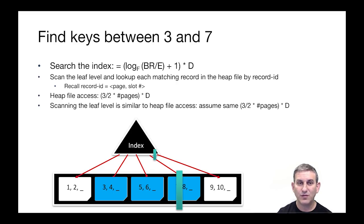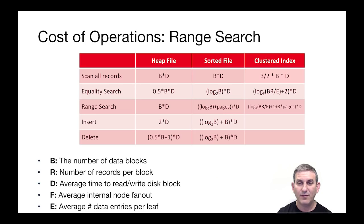Now the heap file was two thirds full. So the heap file access is going to be three halves times the number of pages for what we looked at in the sorted file. So that's three halves times the number of pages times D. And then scanning the leaf level of the index is the last thing to account for. It's similar to the heap file access. It's probably less, but we'll make a worst case assumption here. We'll say that it's three halves times pages times D again, so that the total cost of scanning both the leaf level and the heap file we will account for as three times pages times D. And when we add that all up, we've got our log base F BR over E plus one to walk down the tree plus three times pages. And then that's the number of IOs, which we multiply by D for the cost.